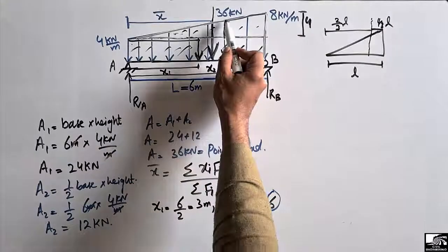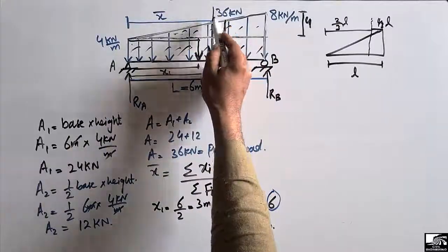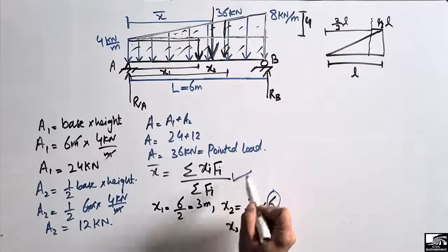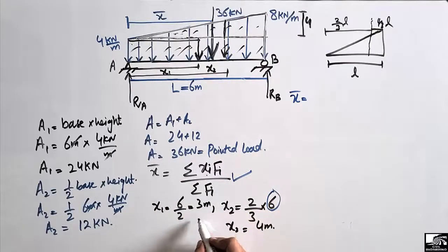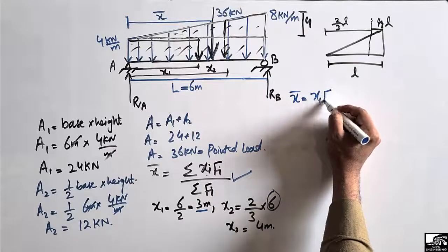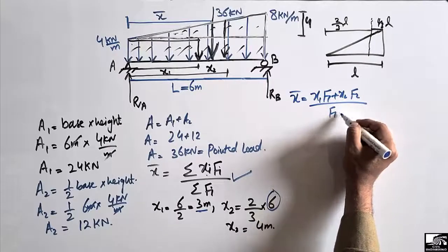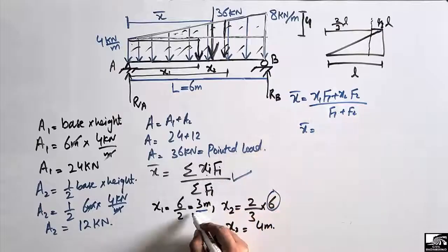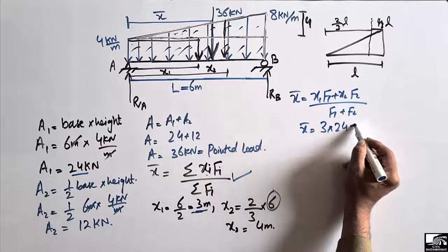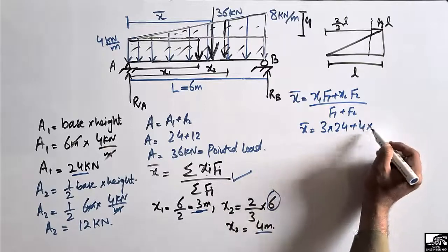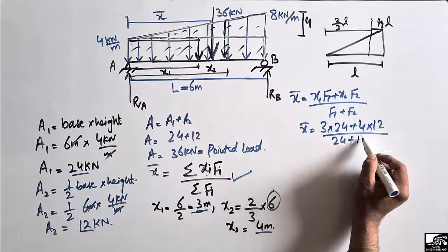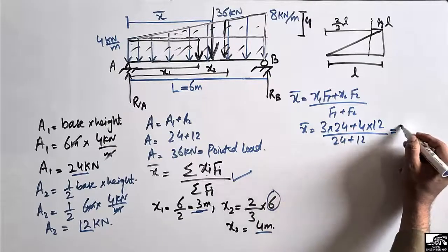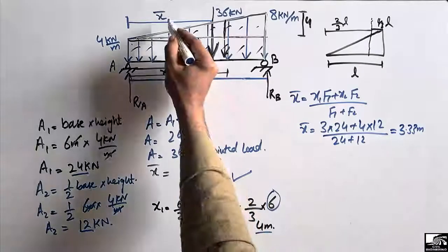Now we use the centroid formula. x-bar = (x1×f1 + x2×f2) / (f1 + f2) = (3×24 + 4×12) / (24 + 12). By calculating, x-bar = (72 + 48) / 36, giving us x-bar = 3.33 m. So the centroid for the total concentrated load is 3.33 m from support A.